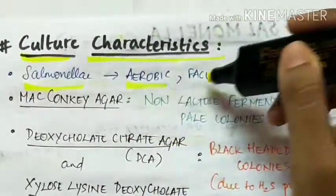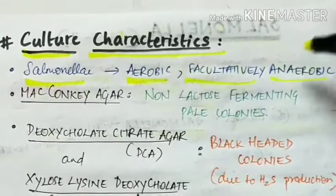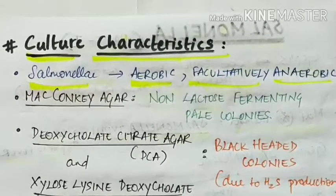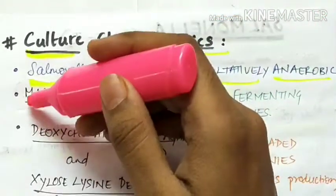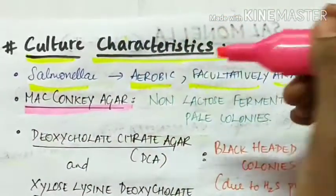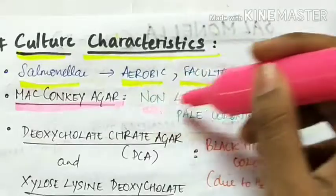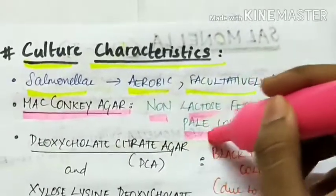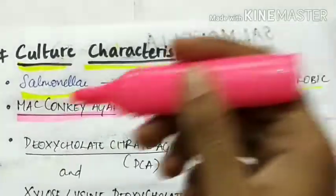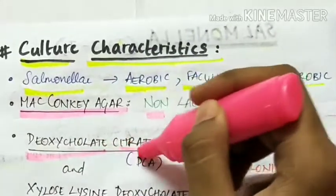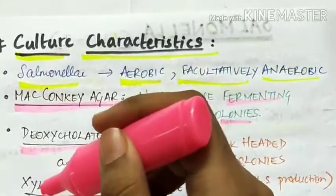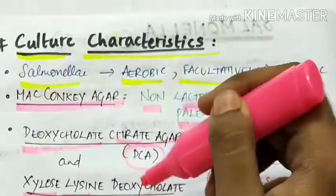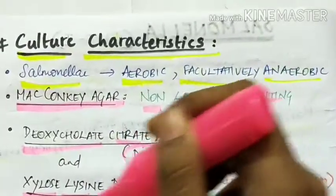Culture characteristics of Salmonella: The Salmonella are aerobic and facultatively anaerobic. Let's see their growth in different types of culture media. First is MacConkey agar - they produce non-lactose fermenting pale colonies. In deoxycholate citrate agar known as DCA and xylose lysine deoxycholate agar XLD,